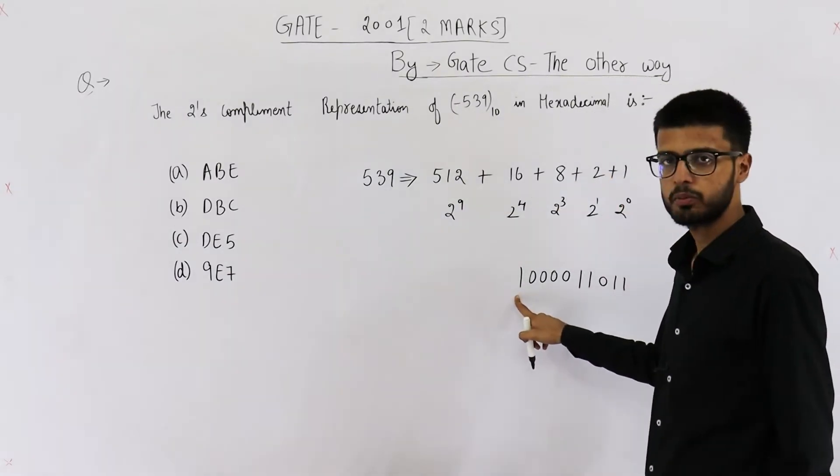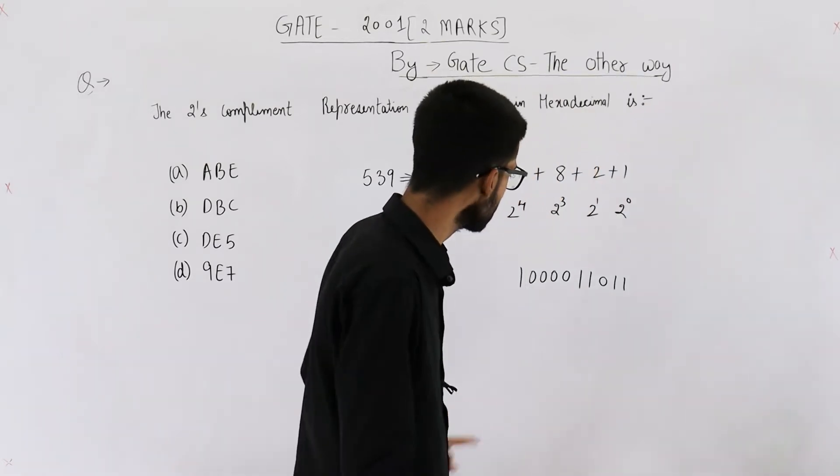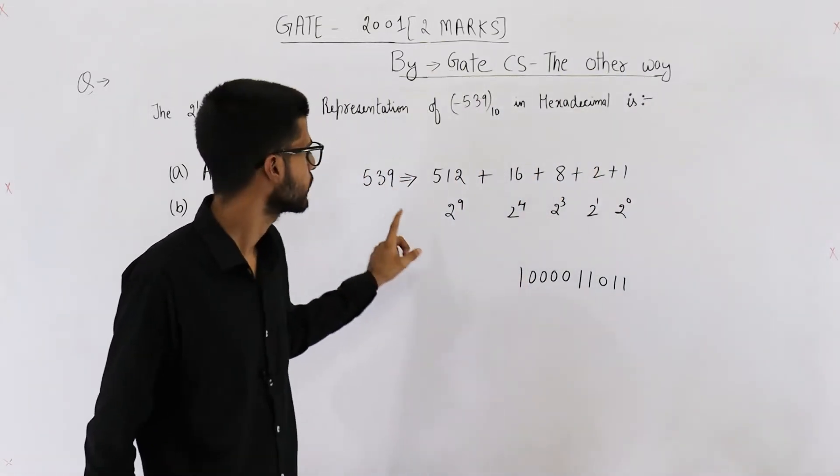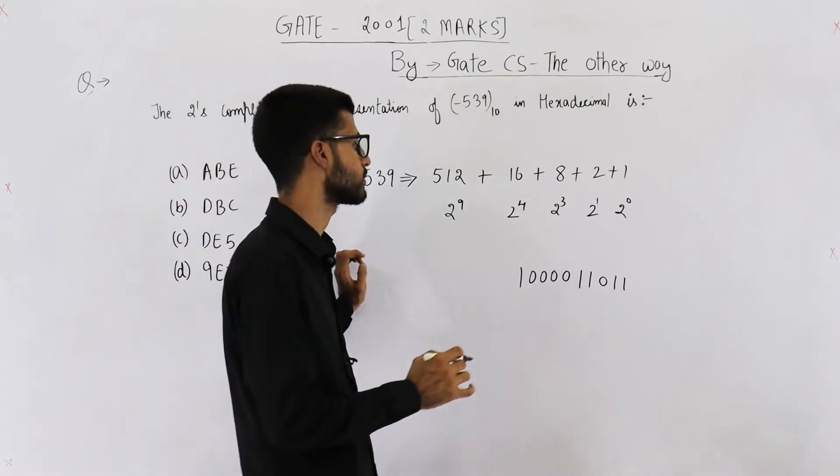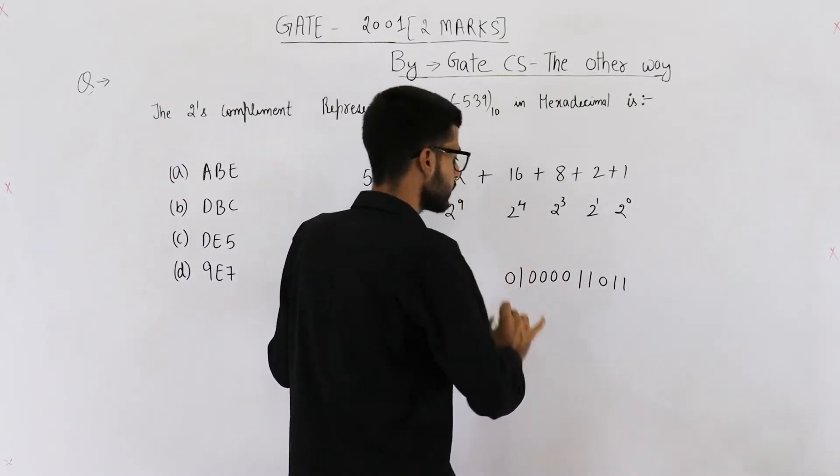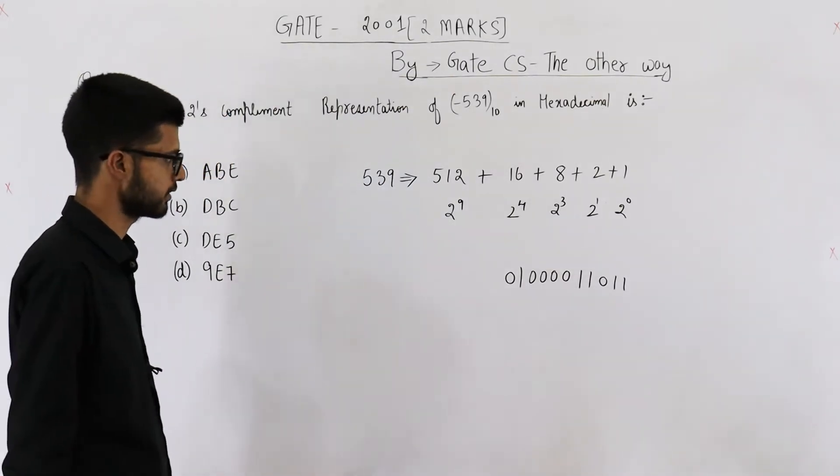So this is how we represent plus 539 in two's complement number system, or is it? In two's complement number system a number starting with 1 is a negative number. So this is not the correct representation of plus 539. Instead, this is correct now. Keep such minute points in mind.